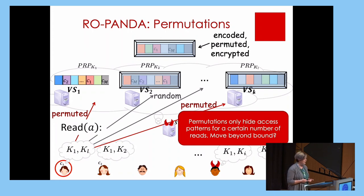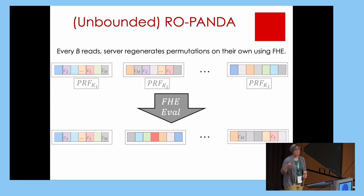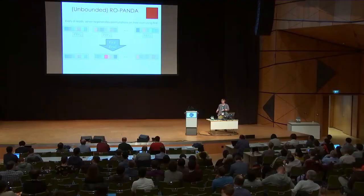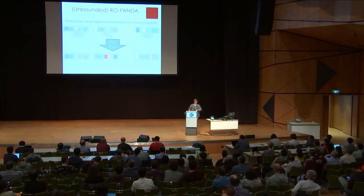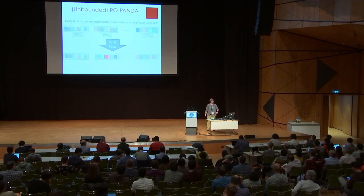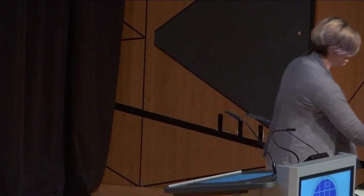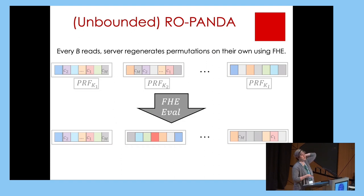To move beyond the bounded query limit, we rely on FHE. For every b reads — where b is the bound — the server regenerates the permutations on its own. Instead of being specified by a pseudorandom permutation directly, the permutations are defined by a PRF whose key is encrypted under FHE, allowing the server to evaluate the permutation and refresh it without learning the key. We amortize this refresh action across our epoch to obtain reasonable worst-case efficiency. This is how we achieve unbounded read-only PANDA.